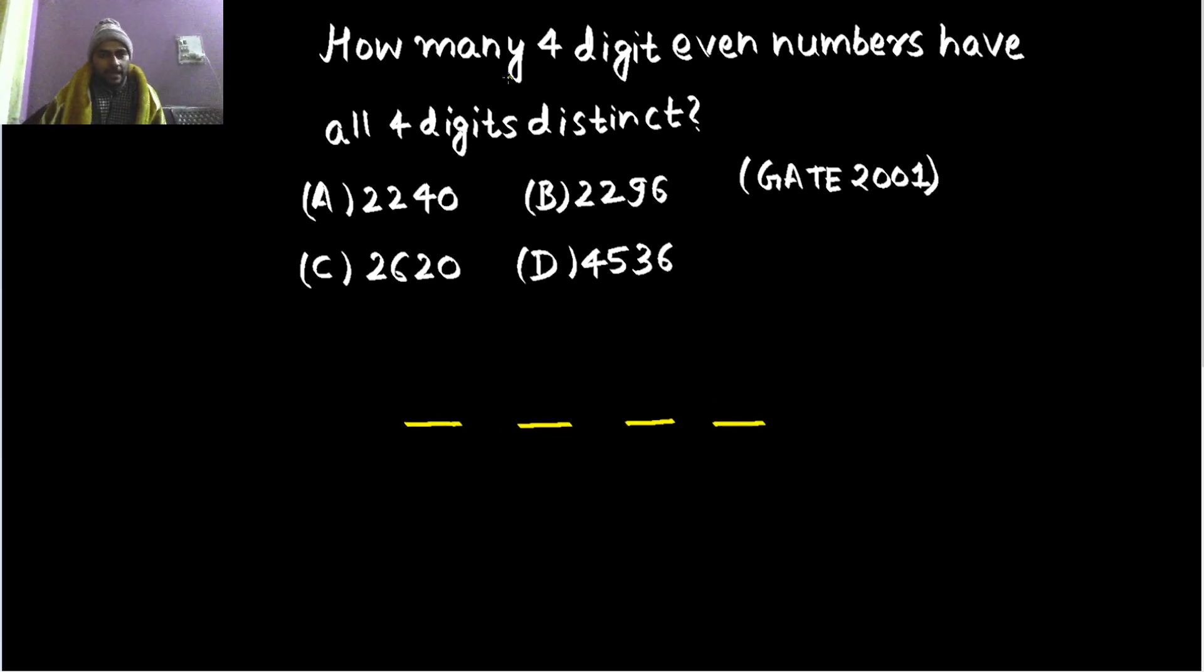Four digit was the first thing to read. Even numbers. Now even number will mean that the last digit can either be 0, 2, 4, 6 or 8. Have all four digits distinct. All four digits distinct means repetition is not allowed. If repetition will not be allowed then all four digits will obviously be distinct in any number formation.